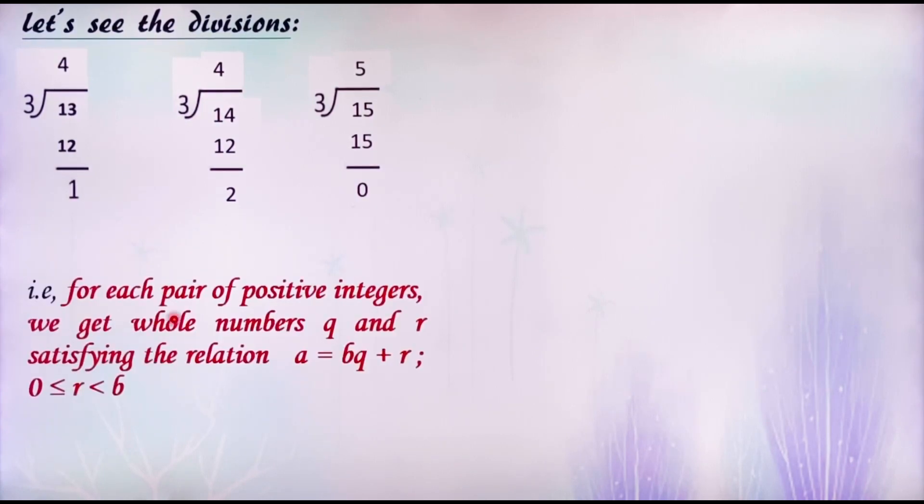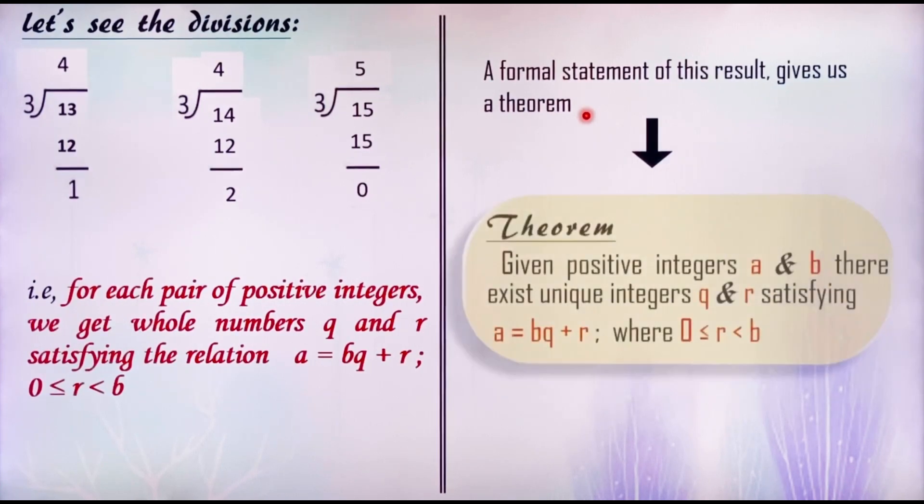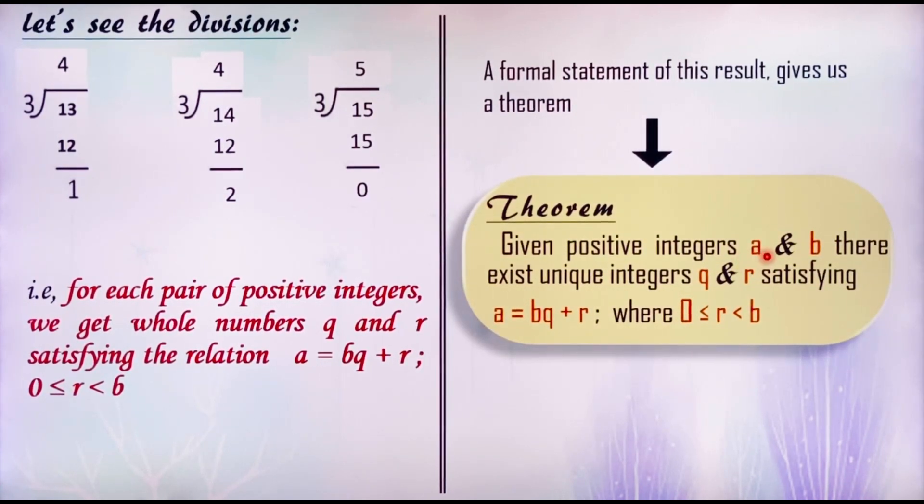That is for each pair of positive integers, we get whole numbers q and r satisfying the relation a equals bq plus r, 0 less than or equal to r less than b. A formal statement of this relation gives us a theorem. Given positive integers a and b, there exist unique integers q and r satisfying a equals bq plus r, 0 less than or equal to r less than b. By heart this theorem.